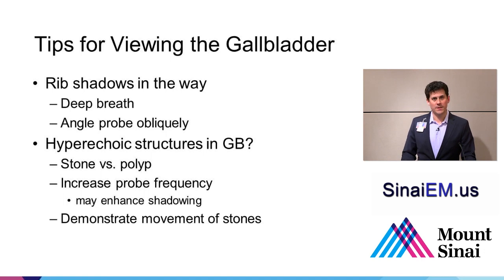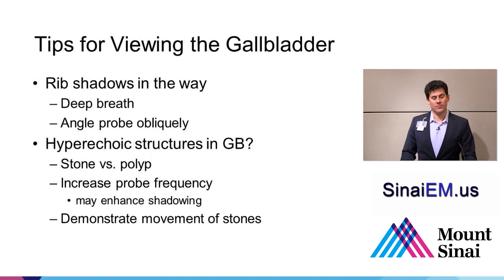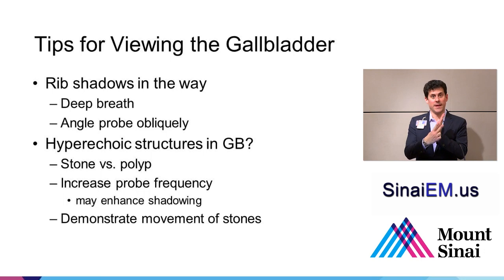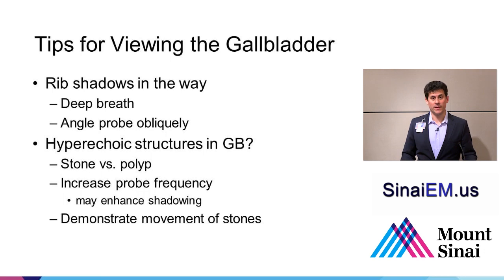Let's stop and talk about a couple of tips for viewing the gallbladder. If rib shadows are in the way, the patient can take a deep breath — that'll push the diaphragm down and bring the liver and hopefully the gallbladder below the costal margin. You can also angle the probe more obliquely so the angle of the ultrasound beam is parallel to the angle of the ribs, opening up more rib space and getting more ultrasound energy in between the ribs.